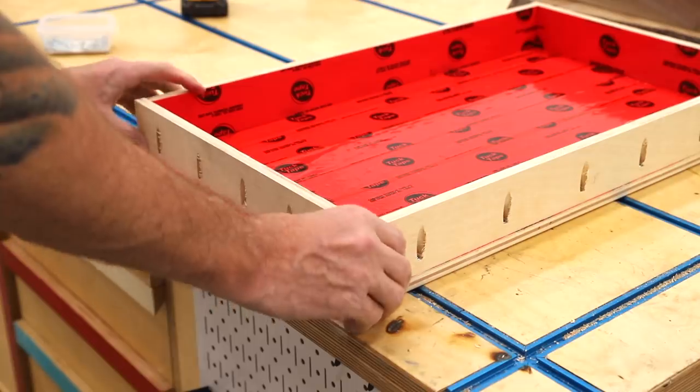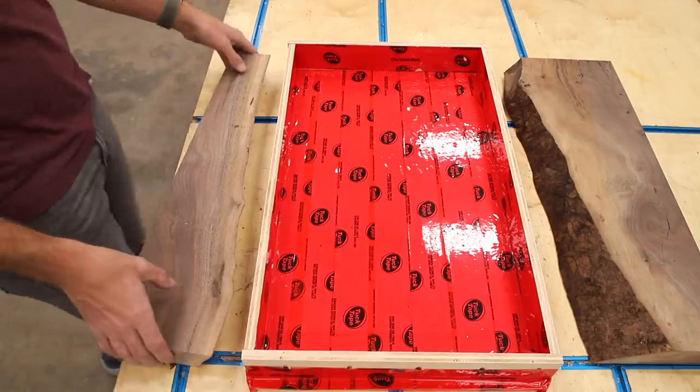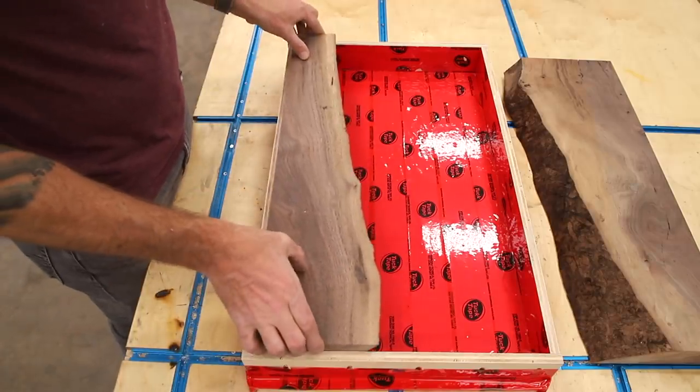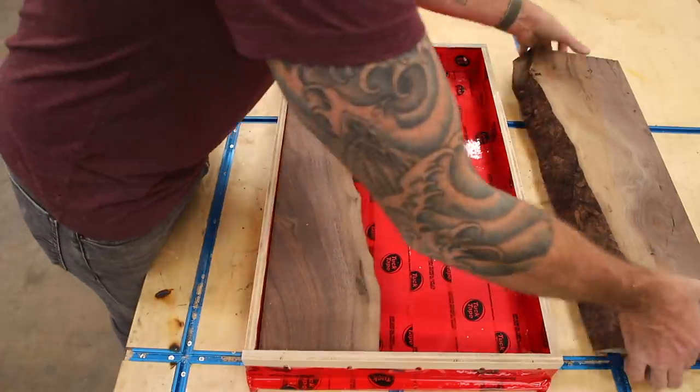I built the form to give the pieces a tight friction fit. Now this helps keep your pieces from floating up and the epoxy getting underneath, which can create a big mess and be quite the task to sand down. Trust me on this, I've had to learn the hard way.